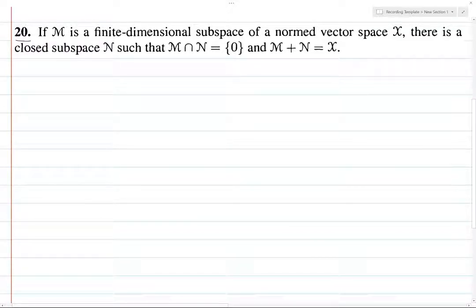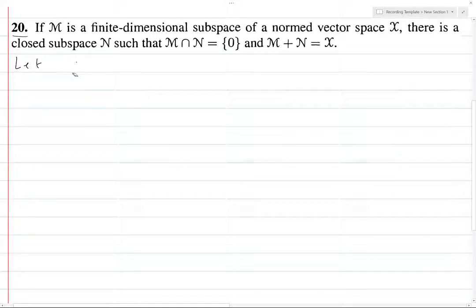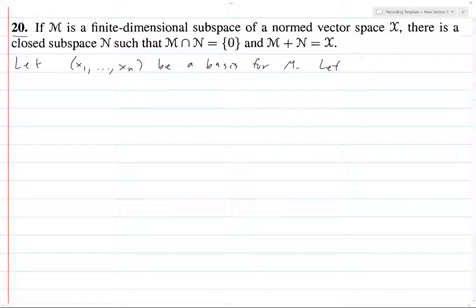Exercise 20. So M is a finite-dimensional subspace. Let x₁ through xₙ be a basis for M. By the way, I think there's an easier proof of this, but I realized that after I'd finished writing this out, so we're just going to go with this one.